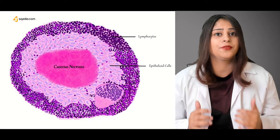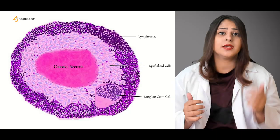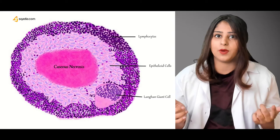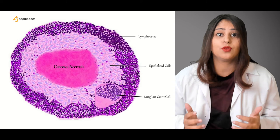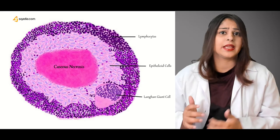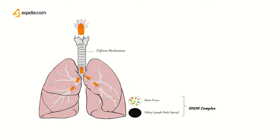This is a Langhans giant cell. Granulomas are of two types: caseating and non-caseating. We have seen a picture of a caseating granuloma, which is seen in Mycobacterium tuberculosis infections. It is also seen in infections by some systemic fungi like histoplasmosis. Non-caseating granulomas can be seen in diseases like sarcoidosis and cat scratch disease. As the granuloma is formed, the next step is calcification and fibrosis, leading to a permanent scar tissue formation in the lungs.